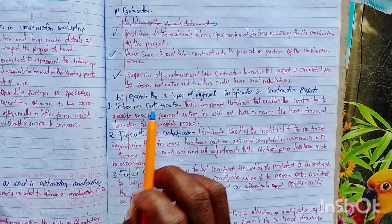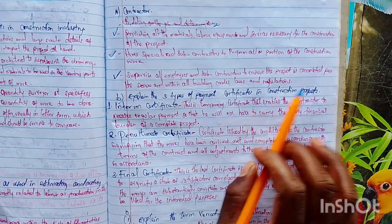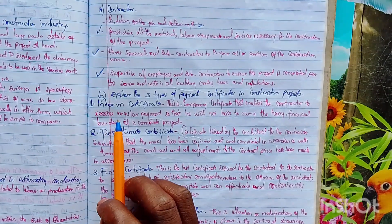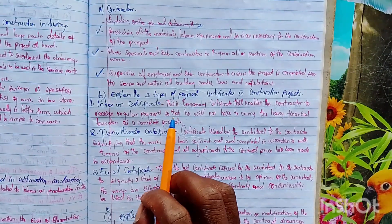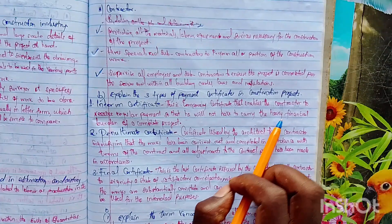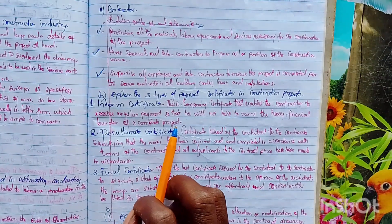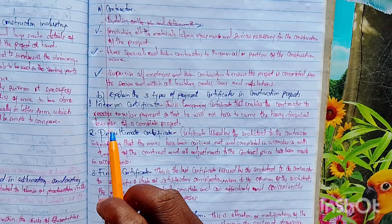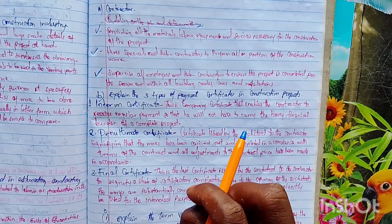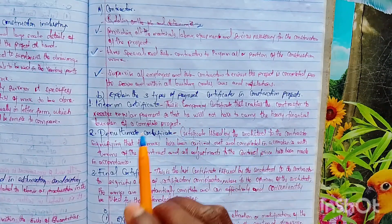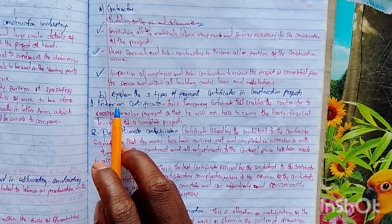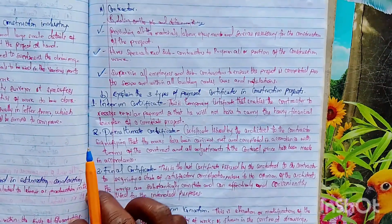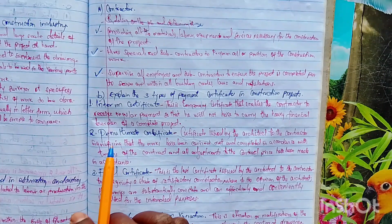The interim certificate is a temporary certificate that enables the contractor to receive regular payments so that he will not have to carry the heavy financial burden of completing the project alone. This is the first certificate that is issued by the architect to the contractor.